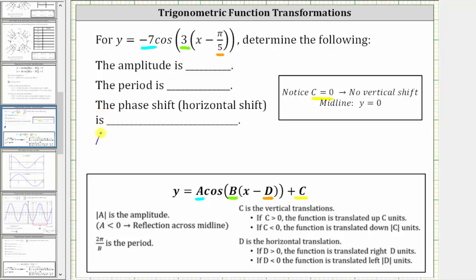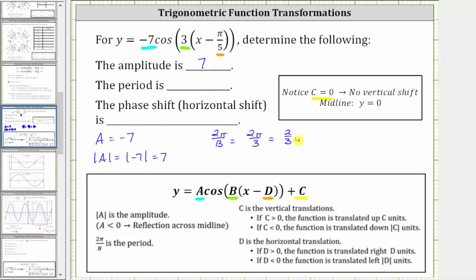Because A is equal to negative seven, we know we have a reflection across the midline. And since the absolute value of A equals the absolute value of negative seven, which is positive seven, the amplitude is positive seven. The period is equal to two pi divided by B, and B is equal to positive three, and therefore the period is two pi divided by three radians, or two-thirds pi radians.